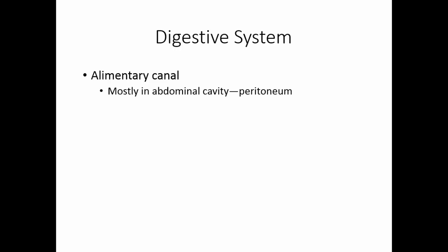The digestive system is responsible for breaking down food and absorbing nutrients. Diseases of the digestive system interfere with this function. The primary part of the digestive system is the alimentary canal, which is simply a tube along which the digestive organs are located. Most of the alimentary canal is in the abdominal cavity, a closed space lined with the peritoneum. There is no normal flora in the peritoneal cavity.